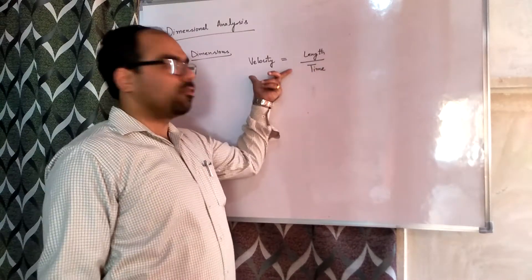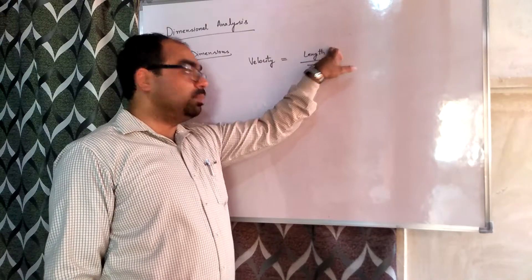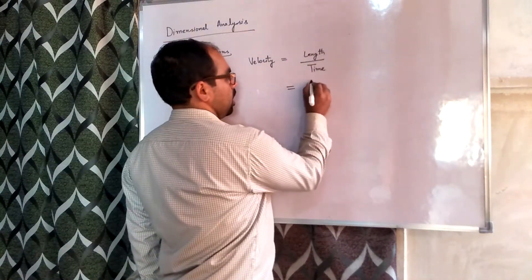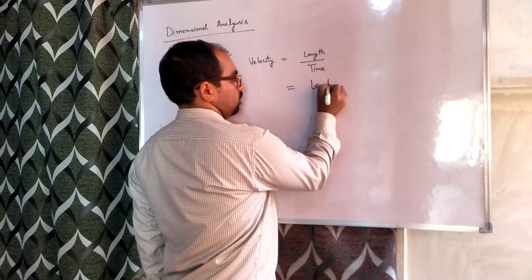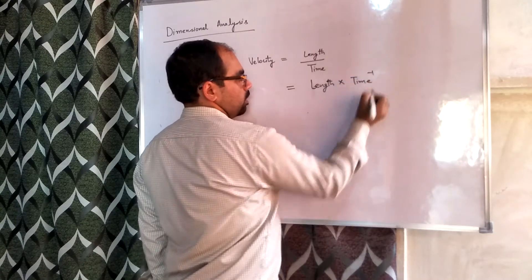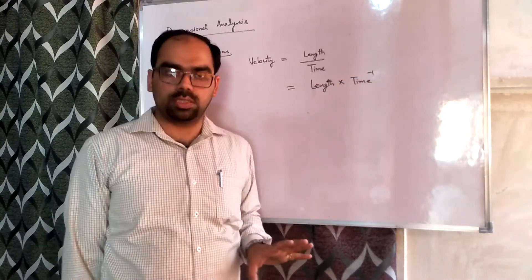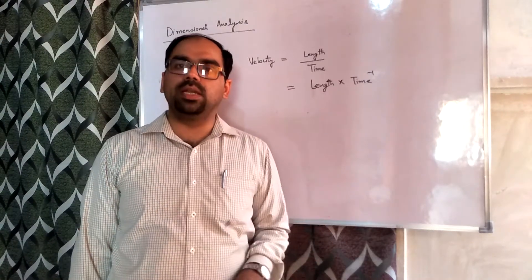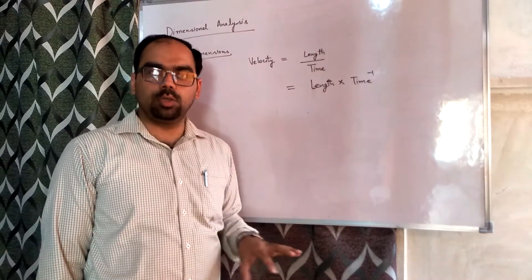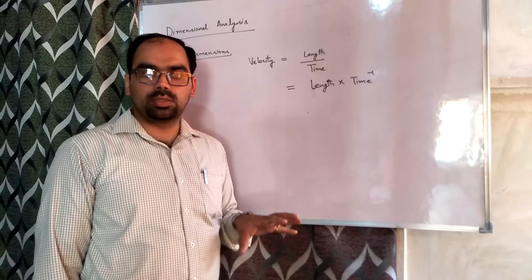This is a breakage of velocity. Now your velocity can be written in terms of length and in terms of time. Length into time inverse gives you the similar variation as that of velocity. So for representing the dimensions, we use certain fundamental quantities which are seven in number, with these certain symbols.